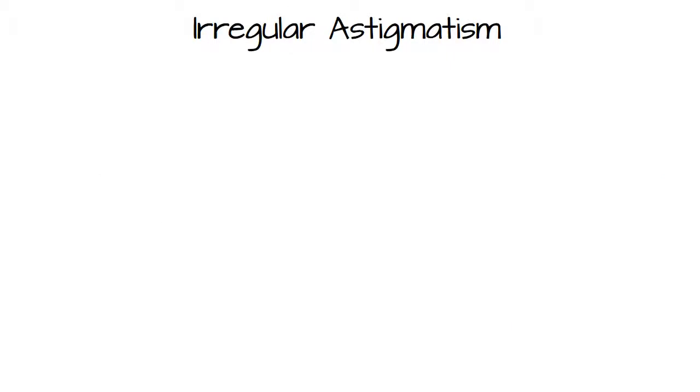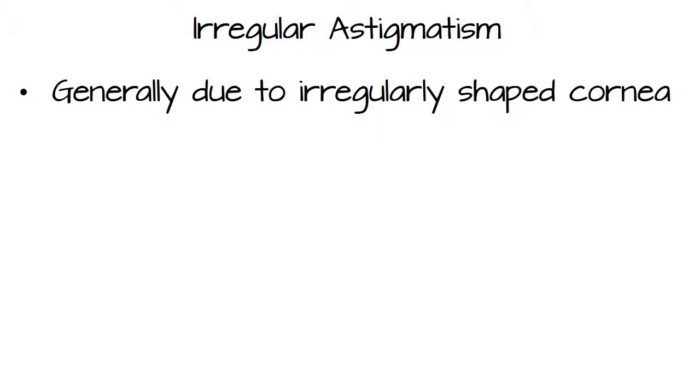Up until now, we've been talking about regular astigmatism. There's also another type, irregular astigmatism. And generally, irregular astigmatism is due to irregularly shaped corneas. And it is distinguished by the fact that the focal lines are not 90 degrees apart.